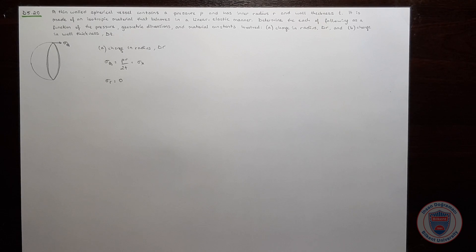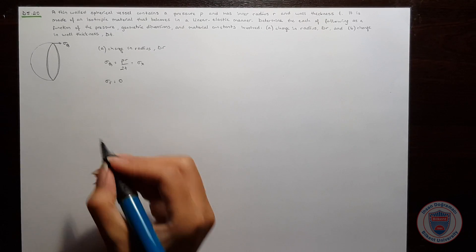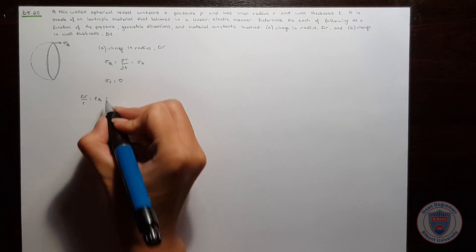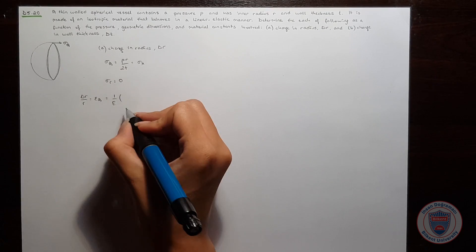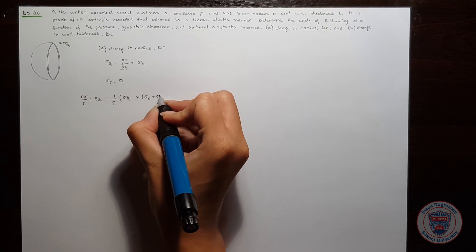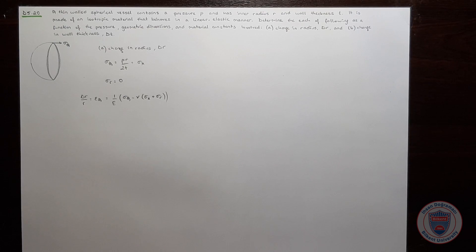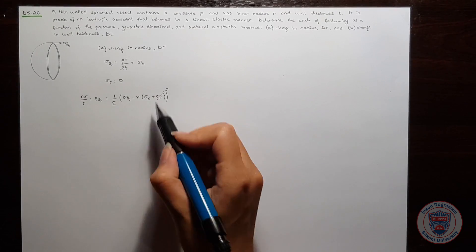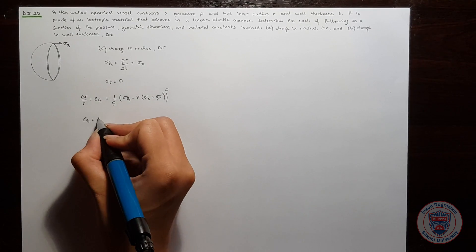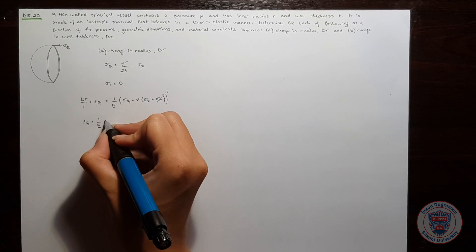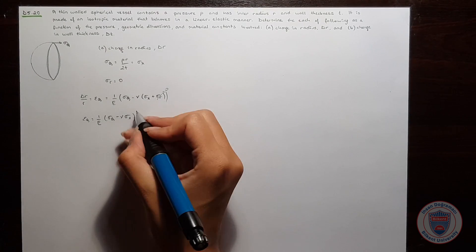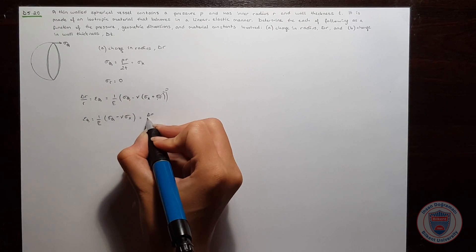For the change in radius, we will need to find epsilon theta, because we know that delta R over R is equal to epsilon theta, and it is equal to 1 over E times sigma theta minus Poisson's ratio times sigma x plus sigma R, from generalized Hooke's law. Since sigma R equals zero, this simplifies to 1 over E times sigma theta minus Poisson's ratio times sigma x, which is again equal to delta R over R.